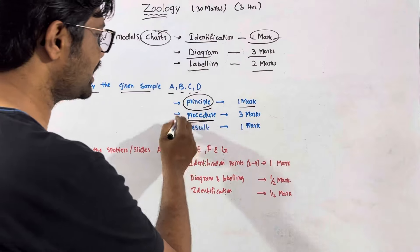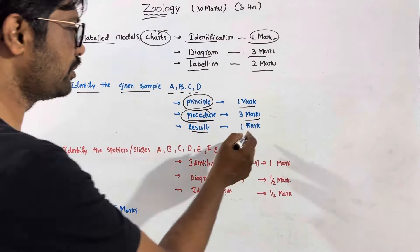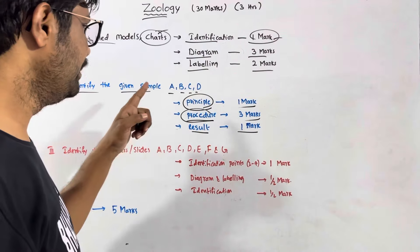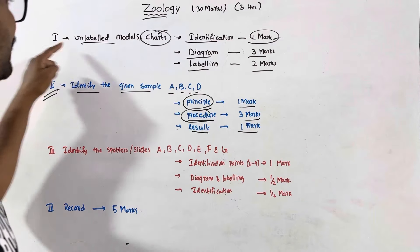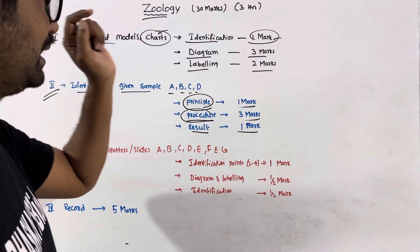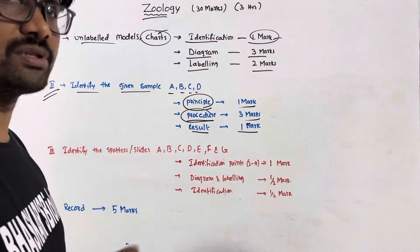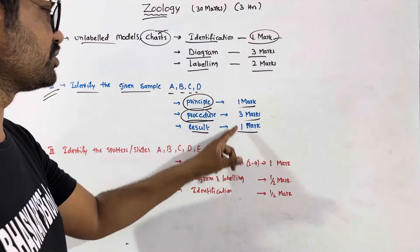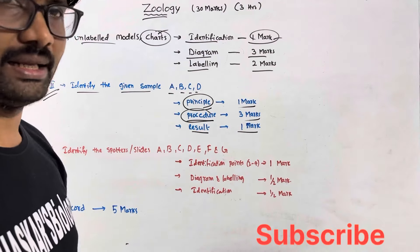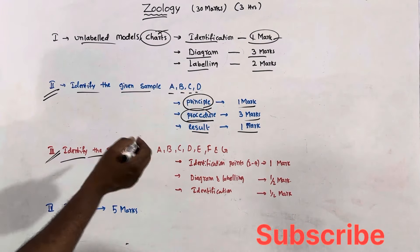For example, if you have glucose test, you need to write the procedure. The procedure is 3 marks, and the result is 1 mark. This section is 5 marks total. The procedure for 3 marks, result for 1 mark, and diagram for 1 mark. This is the experiment with diagram.